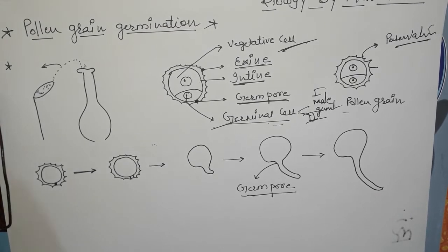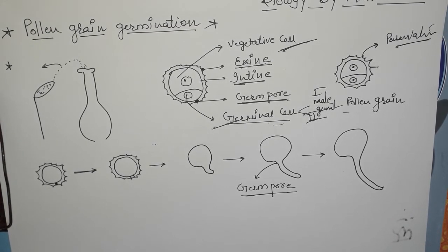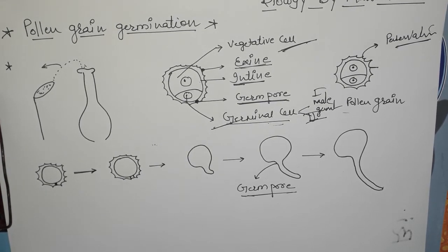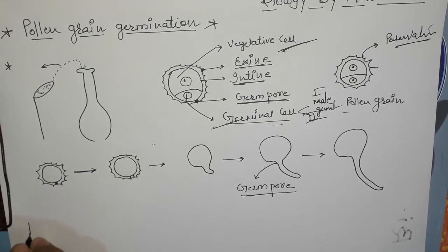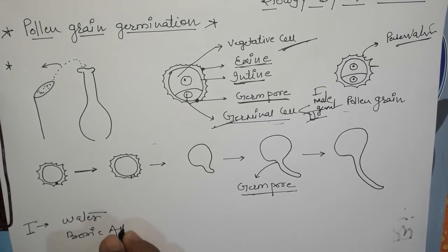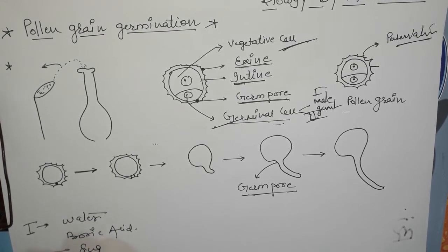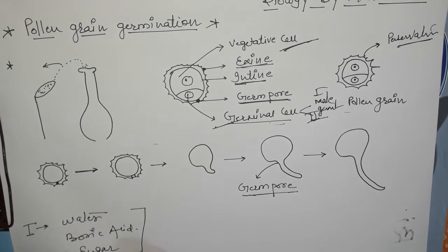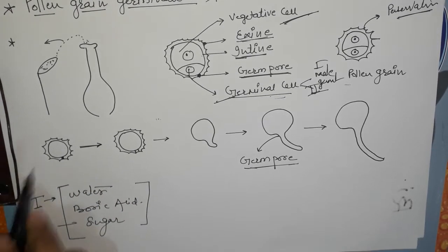Now we will take the process of pollen grain germination. After landing on a stigma, the pollen grain absorbs nutrients. The three important nutrients they absorb are: first, water; second, boric acid; and third, which is very important, sugar.